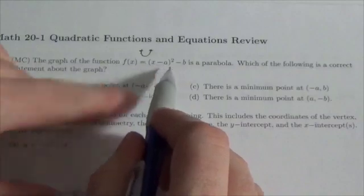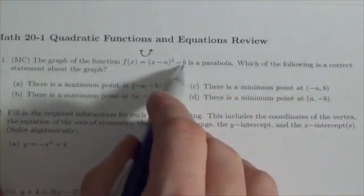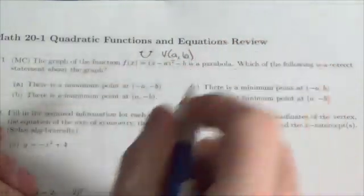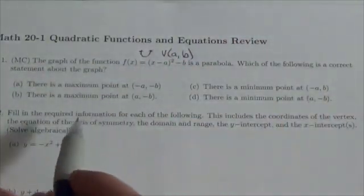And I know that the vertex here, now we're assuming that a and b are both positive here, that the vertex is going to be at the point (a, b). So let's take a look and see what the options are.